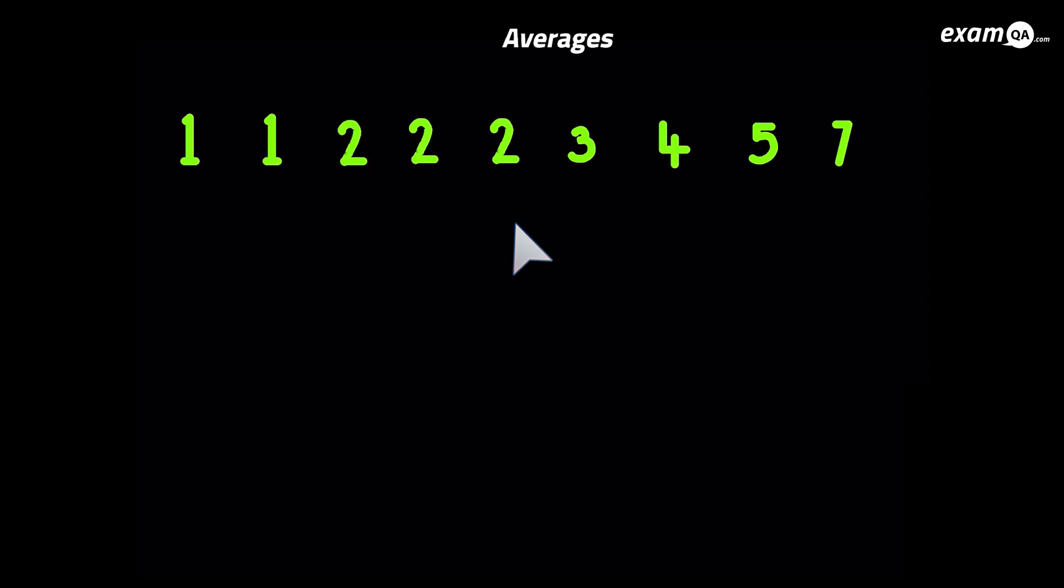So we said we're going to work at the mode first. Now remember, we said mode is the most common number. So which is the most common number here? And hopefully you said two. So the mode is two. So you could say the mode is the most easiest one. It's just the most frequent number.